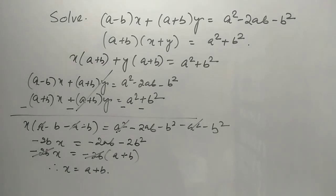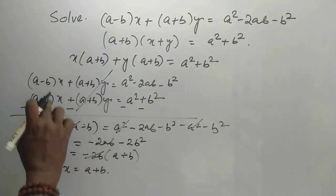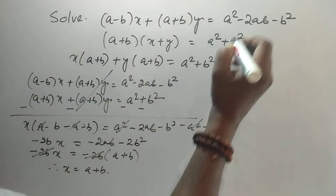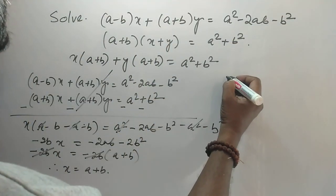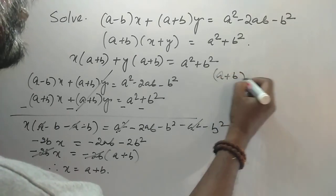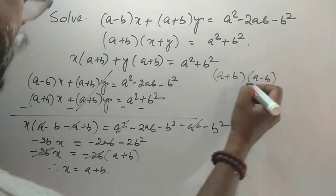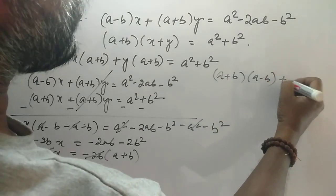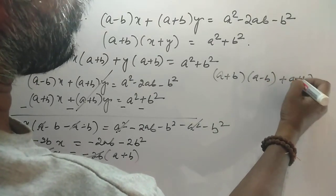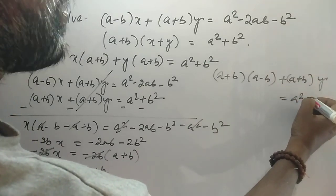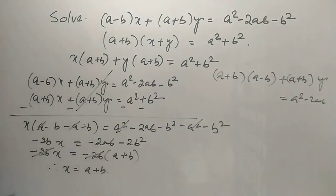Putting the value of x into the first equation: (a plus b) into (a minus b) plus (a plus b) y is equal to a squared minus 2ab, and solving for y.